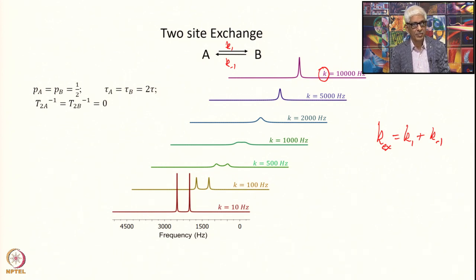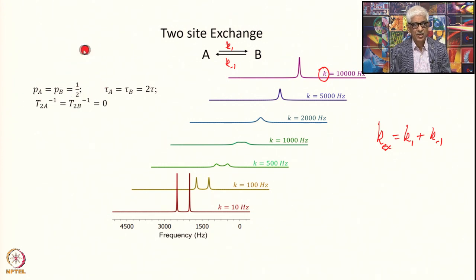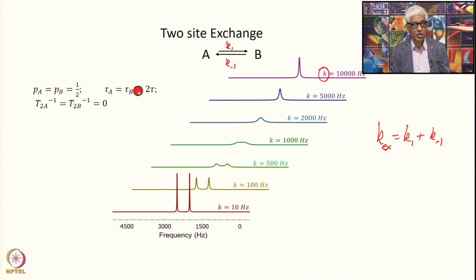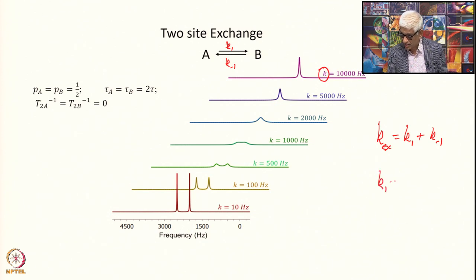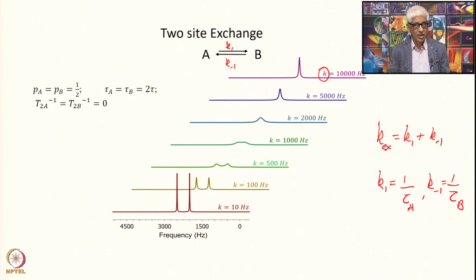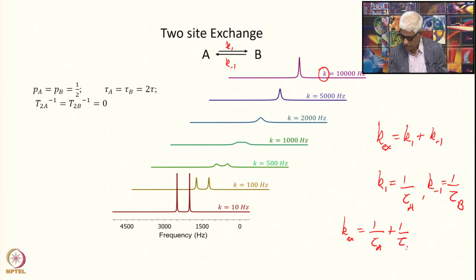This simulation assumes the populations of the two states are identical: P_a = P_b = 1/2. The lifetimes tau_a and tau_b of the individual states are also equal: tau_a = tau_b = 2*tau. The rate k1 = 1/tau_a and k-minus-1 = 1/tau_b, so k_exchange = 1/tau_a + 1/tau_b = 1/tau. A single time constant tau describes how the spectra change as a result of this exchange.